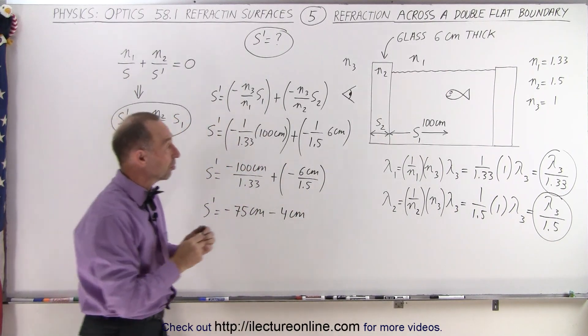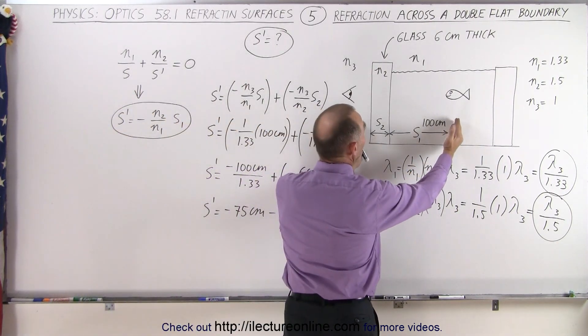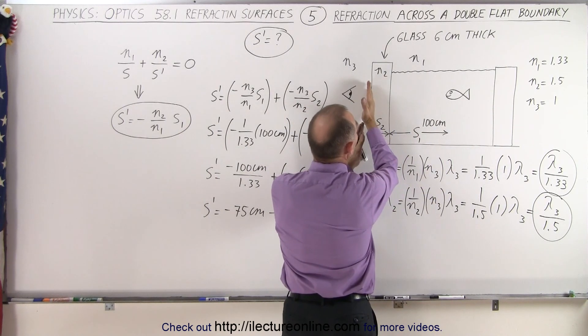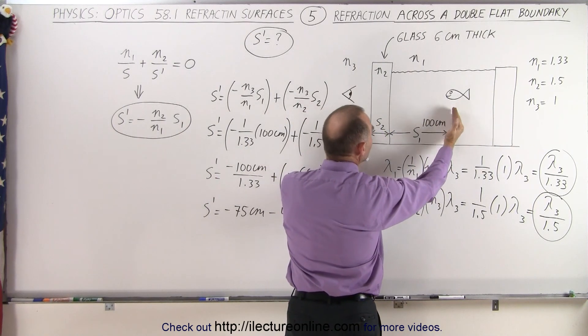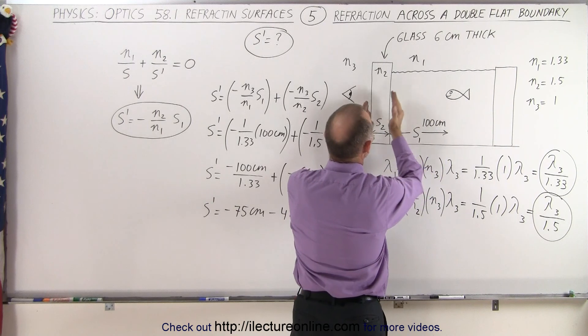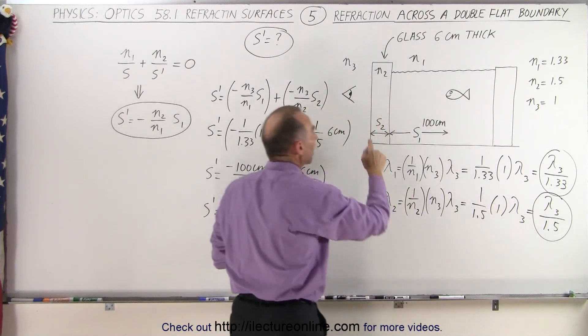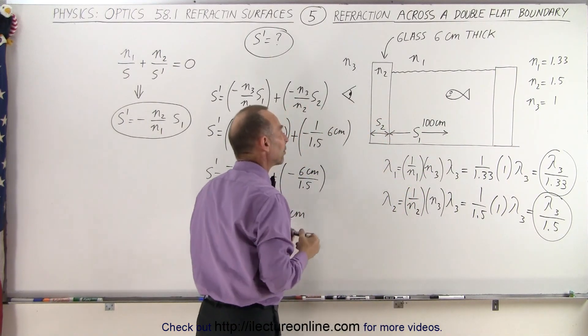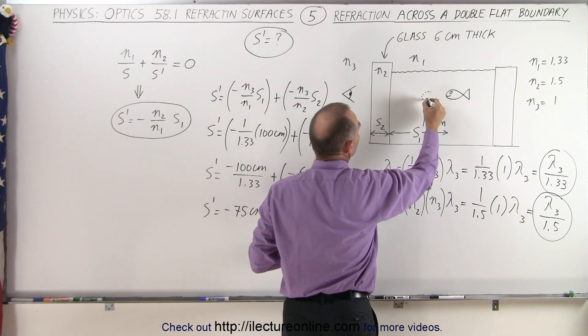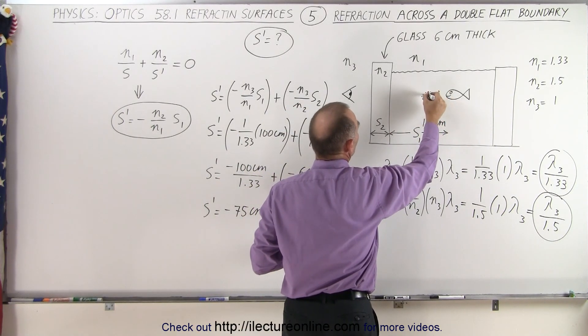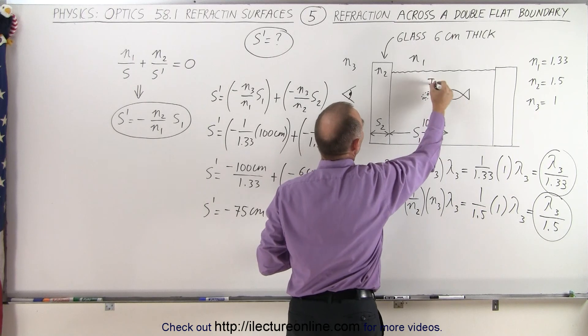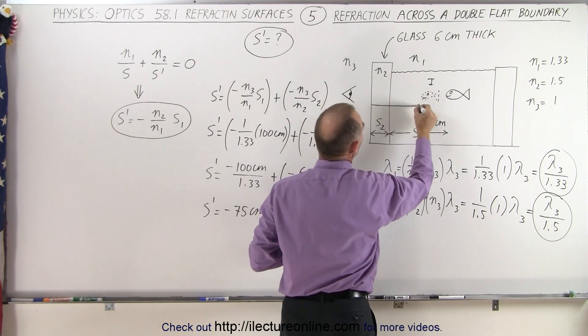So that means that the additional distance, notice that the fish is 106 centimeters away from the boundary right here, but it will appear as if it's 75 plus 4 or 79 centimeters away on the other side of this first boundary right here. So in other words, the image of the fish, right here, there's the image, and then the distance from there to there.